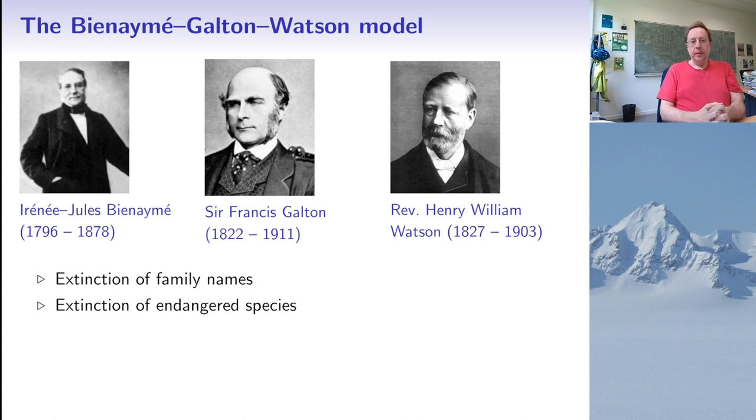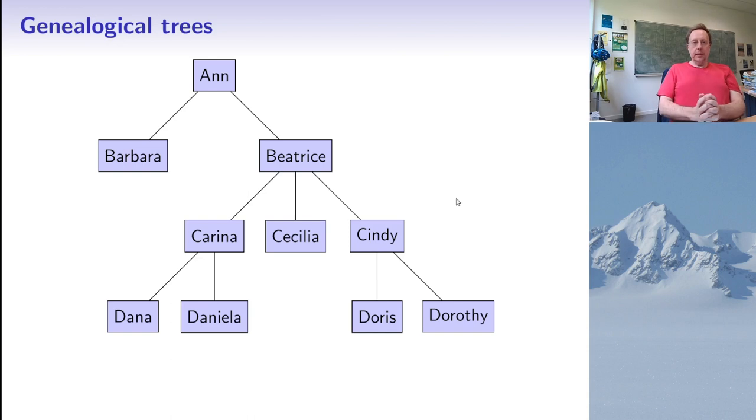But many people are concerned about the extinction of endangered species and this Bienaymé-Galton-Watson model is a simple model that is able to describe this phenomenon to some extent. So to explain the model, let us look at an example of genealogical tree. So here I've only shown the female people from a certain tree, so we have here the ancestor called Anne.